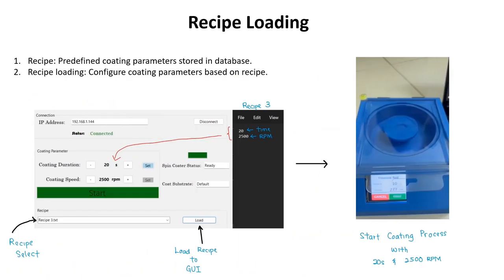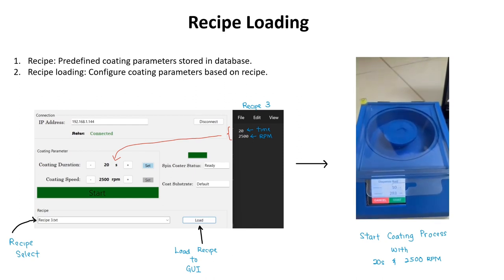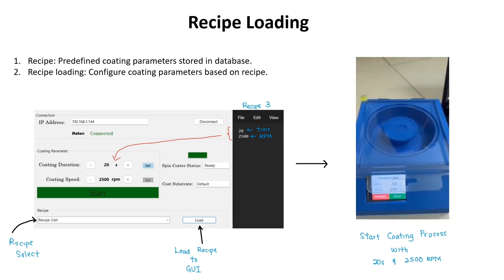Recipe loading is one of the features of the spin coater system. The recipe is a predefined coating parameter stored in the database. Here, recipe 3 was chosen and loaded into the system as shown in the GUI.